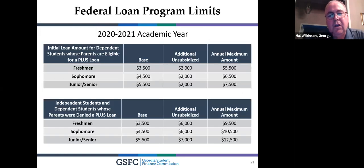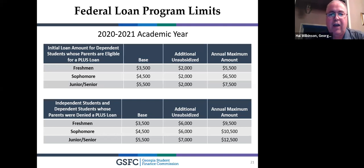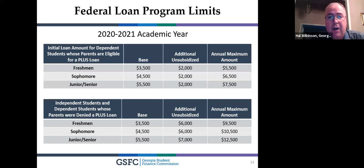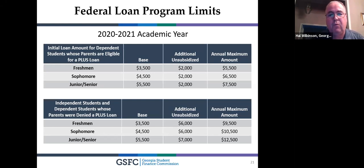Looking at the loan scale: subsidized loans are $3,500 freshman year, $4,500 sophomore year, $5,500 junior and senior year, plus a standard $2,000 unsubsidized each year. If parents are turned down for the Parent PLUS Loan based on a credit check, the student can request the $2,000 unsubsidized be increased to $6,000 — going from $5,500 to $9,500 total freshman year. These loans can be forgiven if you work for a nonprofit or in high-demand fields like education or medicine.